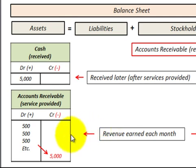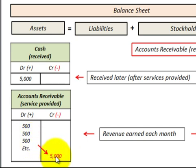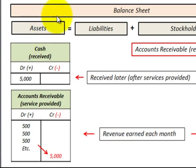After we've provided those goods and services, at some point in the future we receive payment — in this case a five thousand dollar payment. We earn the revenue first, then receive the payment. Upon payment, we decrease — or credit — accounts receivable, and the corresponding debit entry goes to cash. We debit or increase cash by five thousand dollars. Remember, cash is also an asset on the balance sheet.